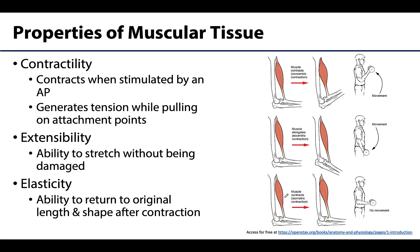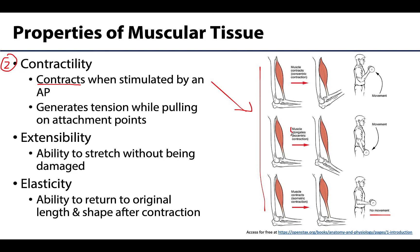The last three properties intuitively go together. First is contractility, which is exactly what it sounds like — a muscle's ability to contract when stimulated by those action potentials. With contraction, the muscle generates tension while pulling on attachment points. We'll discuss different types of contraction in another video, but some contractions produce tension with no movement and no muscle shortening, while in certain contractions the muscle actually elongates.